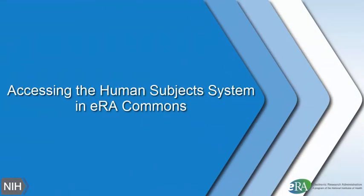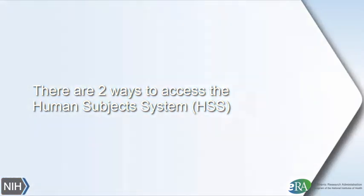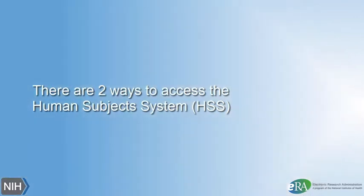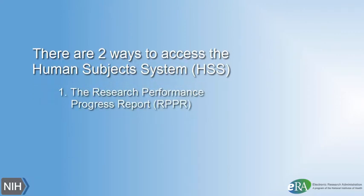Welcome to this video tutorial on how to access the Human Subjects System in ERA Commons. There are two ways to access the Human Subjects System in ERA Commons to update the Human Subjects and Clinical Trials information associated with your grant or application. One is through the Research Performance Progress Report, RPPR tab. The other is via the Status tab.